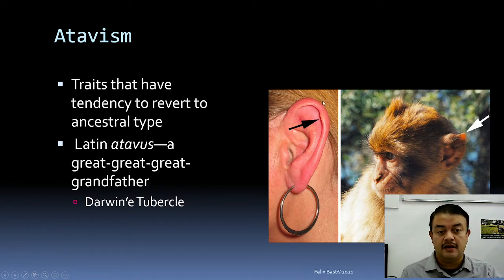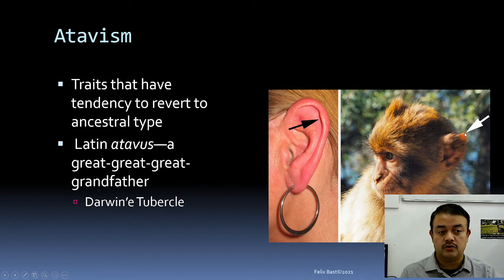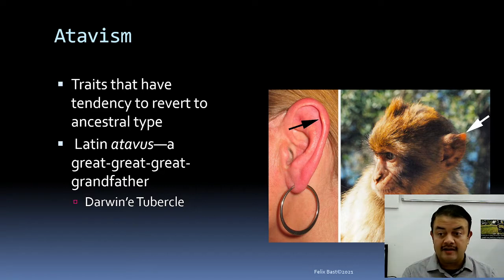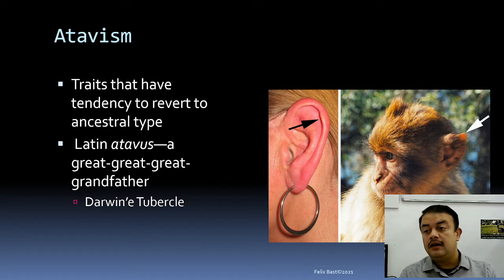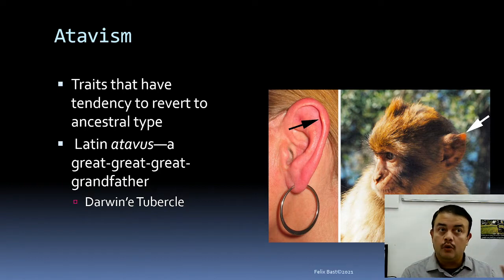If you inspect the ear closely, most of us have this small section on the pinna. Darwin wrote about it in 'The Descent of Man' as a vestigial structure. Vestigial structures are rudimentary traits or organs homologous to fully functional traits in related animals. Another example is the tailbone — the coccyx — a relic of our ancestry with animals that had a real tail.